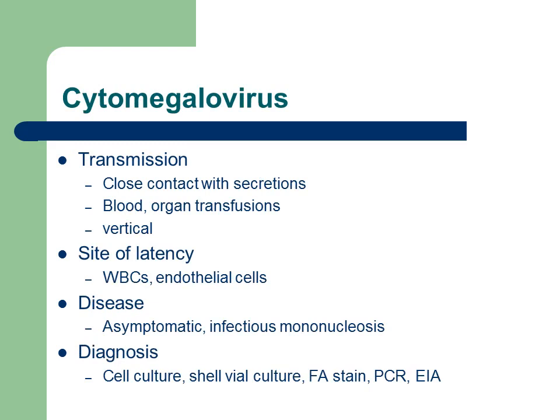Another herpes virus is cytomegalovirus, or CMV. Transmission is through close contact with secretions, through blood and organ transfusions, as well as vertically from mother to infant. The site of latency of CMV is endothelial cells and white blood cells. Cytomegaloviral infections can be completely asymptomatic or they can cause an infectious mononucleosis-like disease. Diagnosis methods include cell culture, shell vial, fluorescent antibody staining, PCR, and EIA. I used to do ELISA testing for CMV in the laboratory.